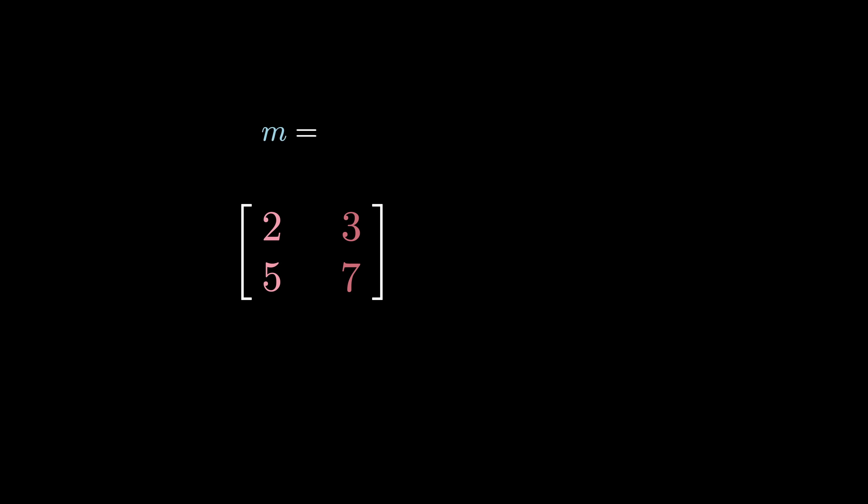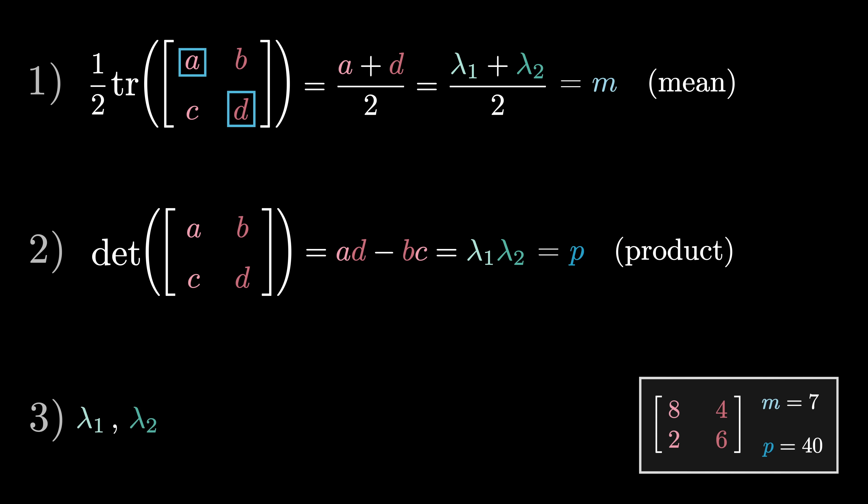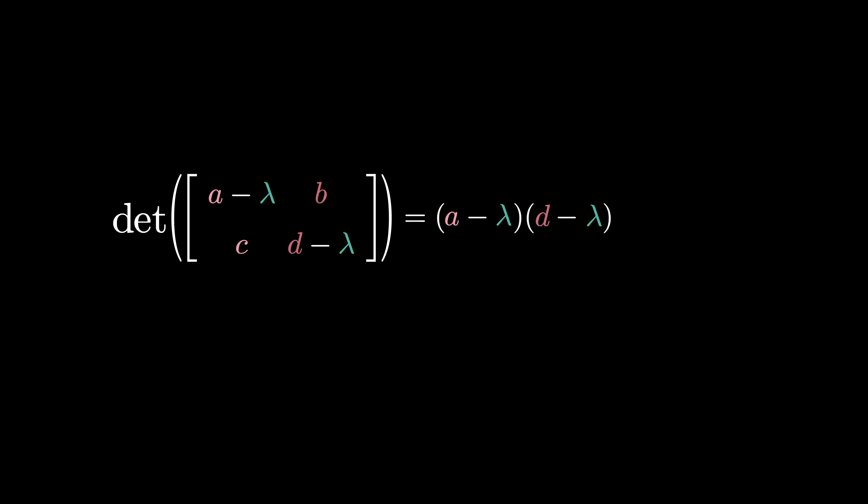I realize this is a very specific trick for a very specific audience, but it's something I wish I knew in college, so if you happen to know any students who might benefit from this, consider sharing it with them. The hope is that it's not just one more thing that you memorize, but that the framing reinforces some other nice facts that are worth knowing, like how the trace and the determinant are related to eigenvalues. If you want to prove those facts, by the way, take a moment to expand out the characteristic polynomial for a general matrix, and then think hard about the meaning of each of these coefficients.